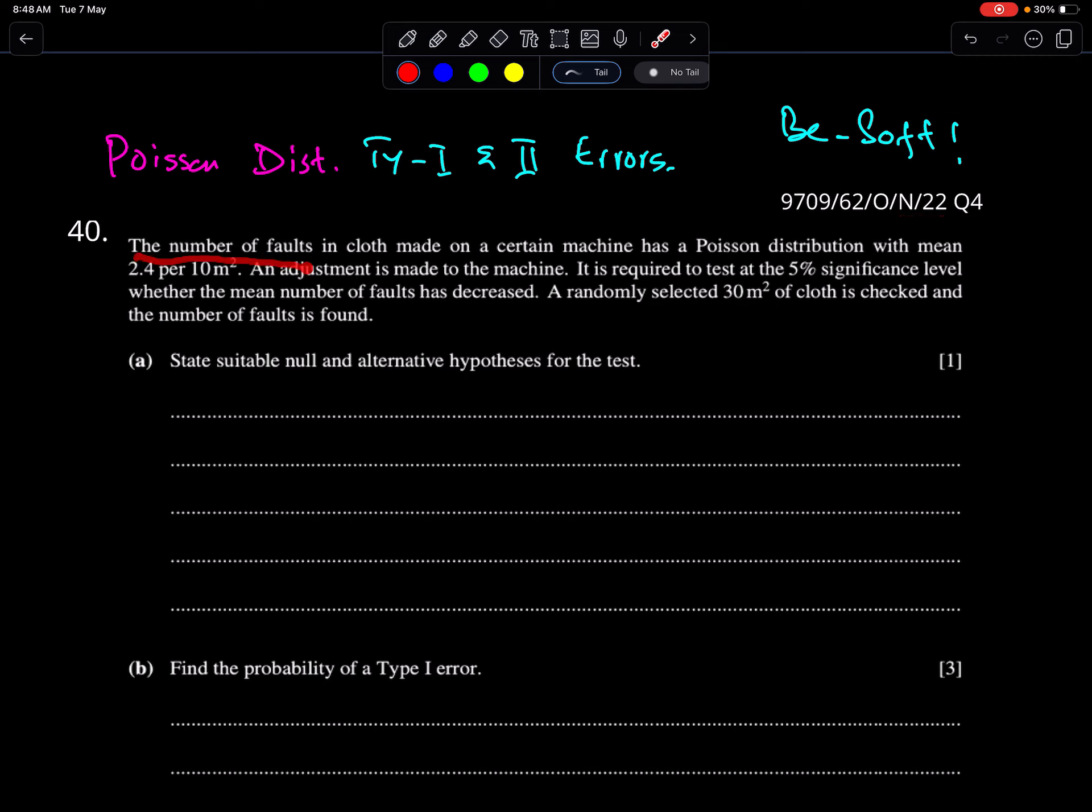The number of faults in cloth made on a certain machine has a Poisson distribution with mean 2.4 per 10 meter square. An adjustment is made to the machine. It is required to test at 5% significance level whether the mean number of faults has decreased. So H1 is lambda less than, a lower tail test. A randomly selected 30 meter square, for 30 meter square lambda is 7.2, and the number of faults is found.